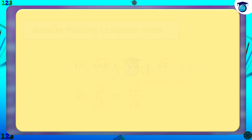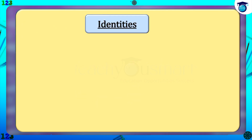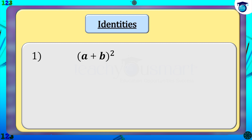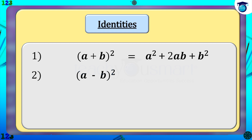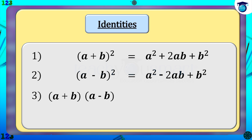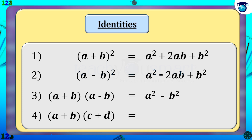We already know these identities. First, (a+b)² equals a² plus 2ab plus b². Second, (a−b)² equals a² minus 2ab plus b². Third, (a+b)(a−b) equals a² minus b². Fourth, (a+b)(c+d) equals ac plus ad plus bc plus bd.